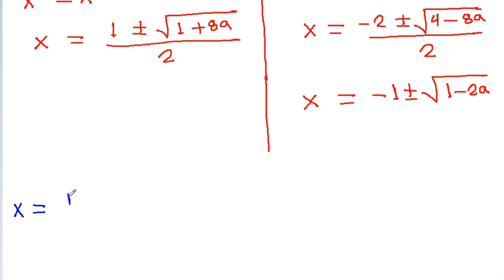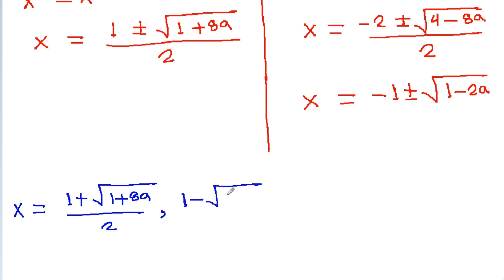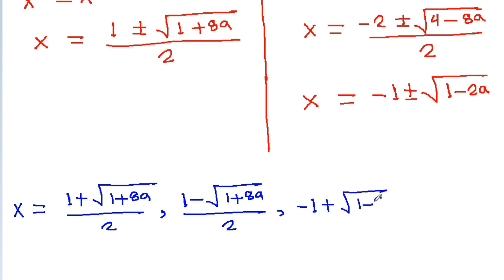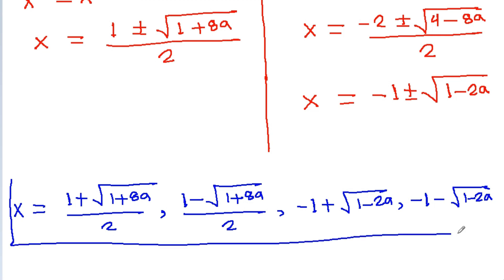So the four values of x are: x = (1 + √(1 + 8a)) / 2, x = (1 − √(1 + 8a)) / 2, x = −1 + √(1 − 2a), and x = −1 − √(1 − 2a). These are the four values of x.